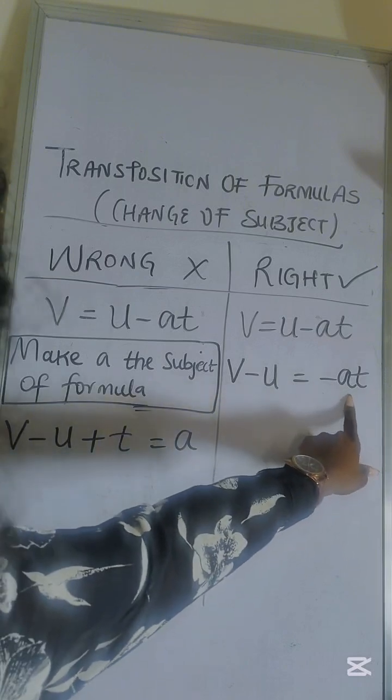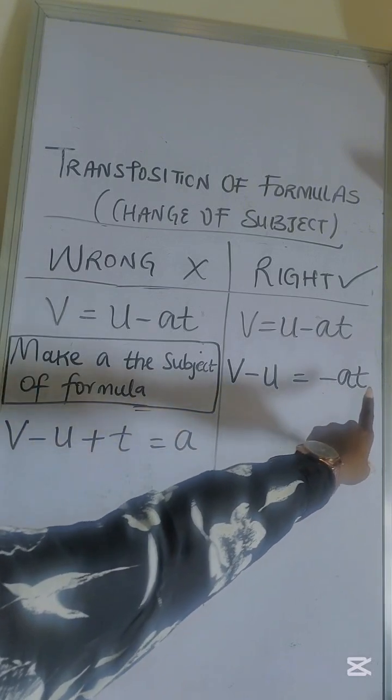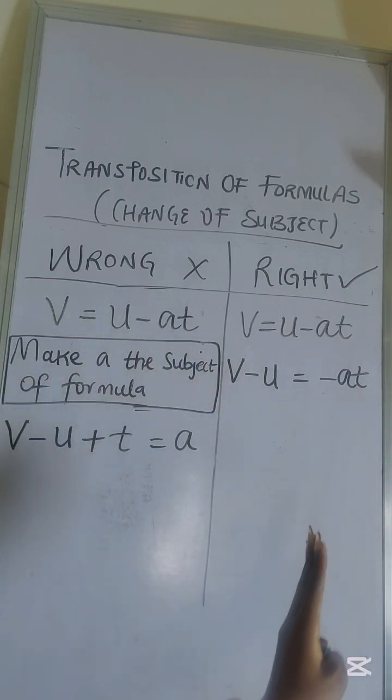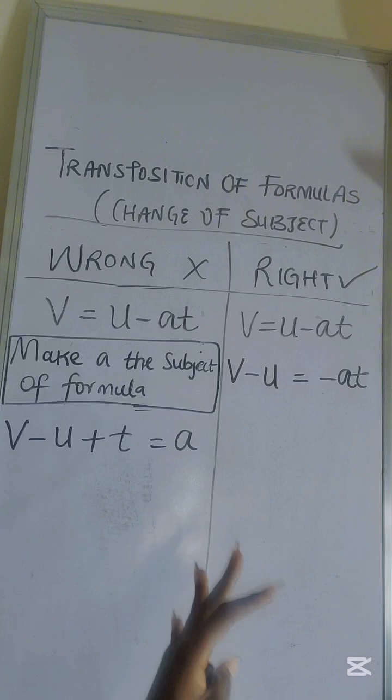Now we still have a here. How do we move t or isolate a such that we have just a standing on its own? That's how we make a subject of formula. So now you can divide through, divide both sides by minus t.